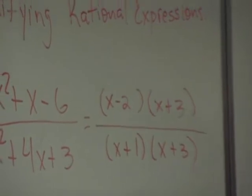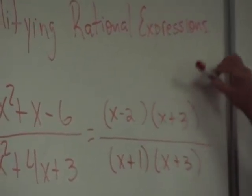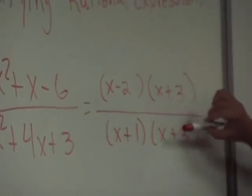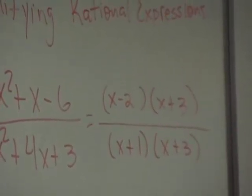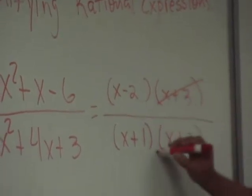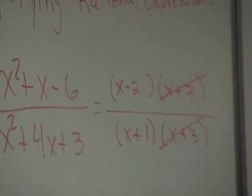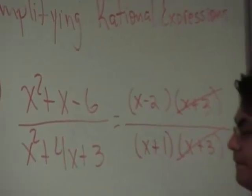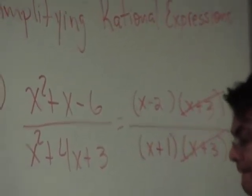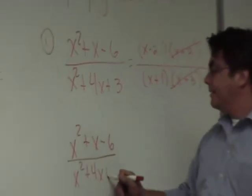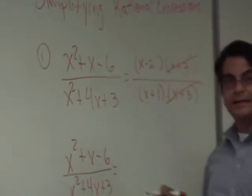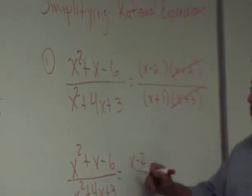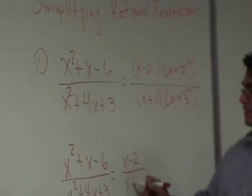What have we done in the past when the numerator and the denominator of a fraction have a common factor? Cancel out. What can I cancel out right here? x plus 3. So here's what we are saying. We are saying that this expression right here, when you simplify it, is equal to what's left: x minus 2 over x plus 1.